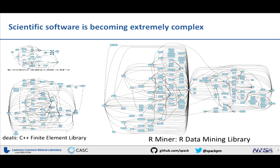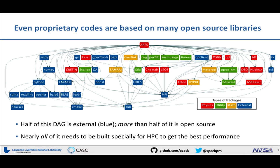The thing in the middle is R; the stuff to the left is all things written in R, and the stuff to the right is all the stuff that R needs to run. Who's ever built something like this? It's pretty painful. Even our proprietary codes are based on lots of open source libraries and can be a pain to build. This is Aries — a production multi-physics code from Lawrence Livermore. All the stuff in blue up there is open source libraries that Aries depends on, like Python, whatever MPI implementation you're using, HDF5. The red, green, and yellow are packages developed at Livermore implementing different physics in Aries. Managing a code like this can be a giant pain.